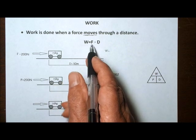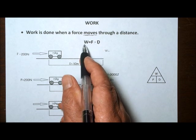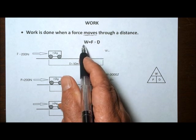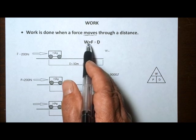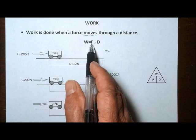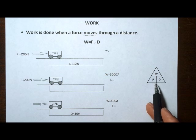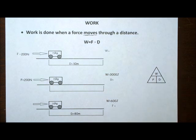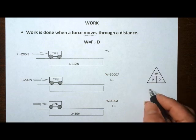If we're given a force and a distance, we should be able to calculate work. If we're given a distance and work, we should be able to calculate force. And if we're given work and force, we should be able to calculate distance. That's why we use that magic triangle — it helps you get around using algebra. It's a quick and easy way to remember how to rearrange an equation.